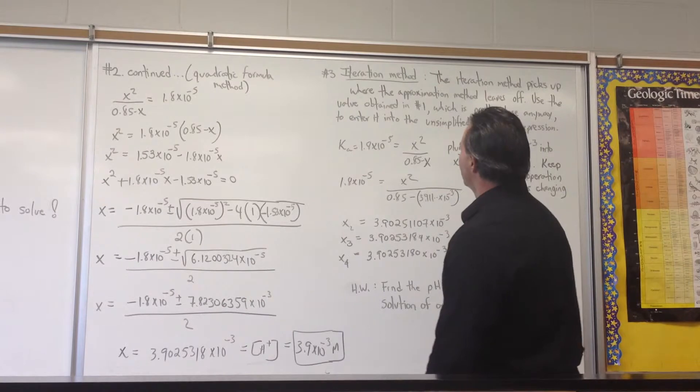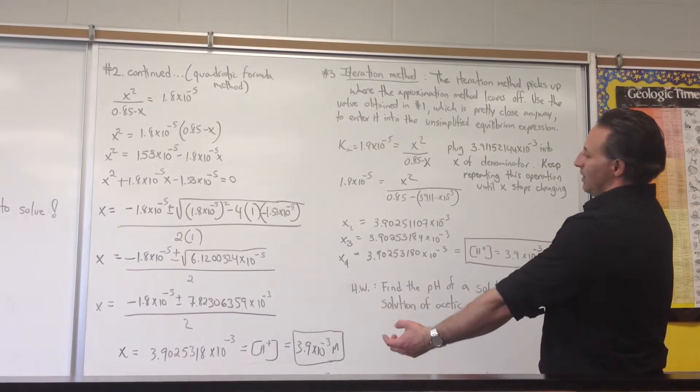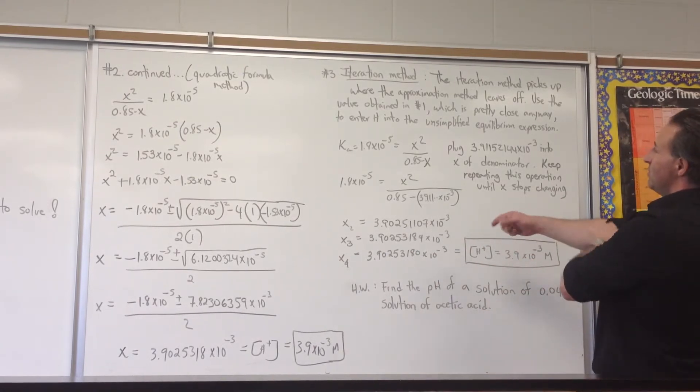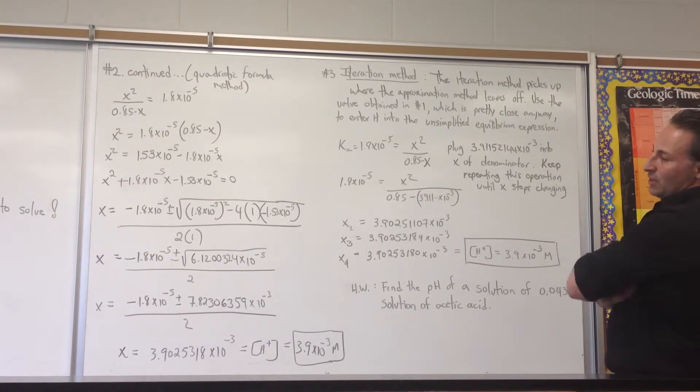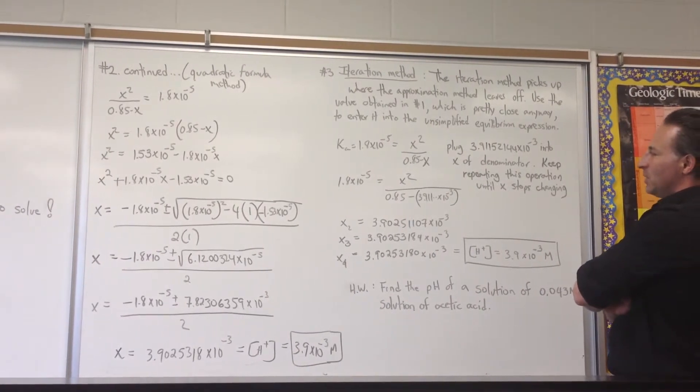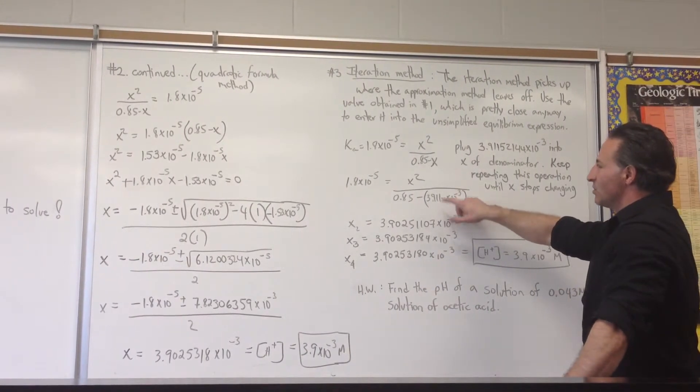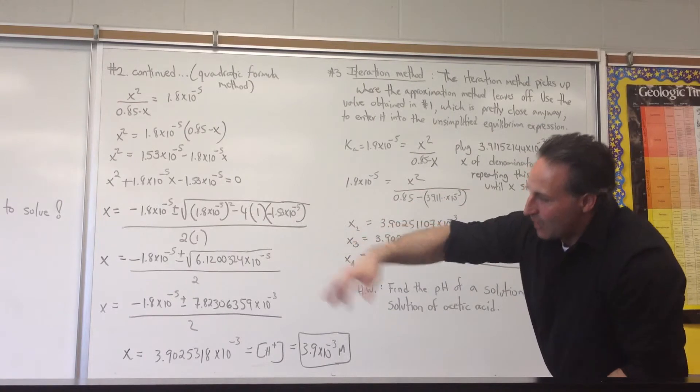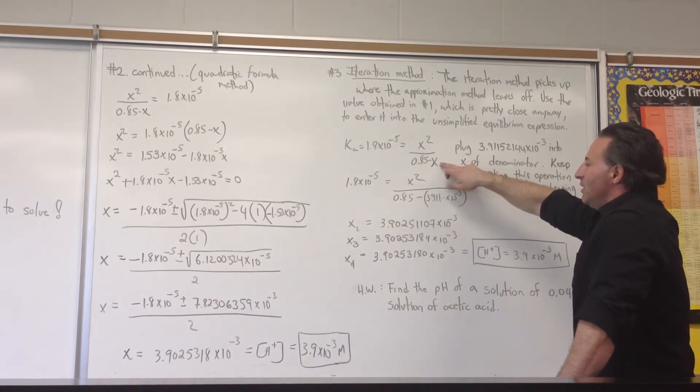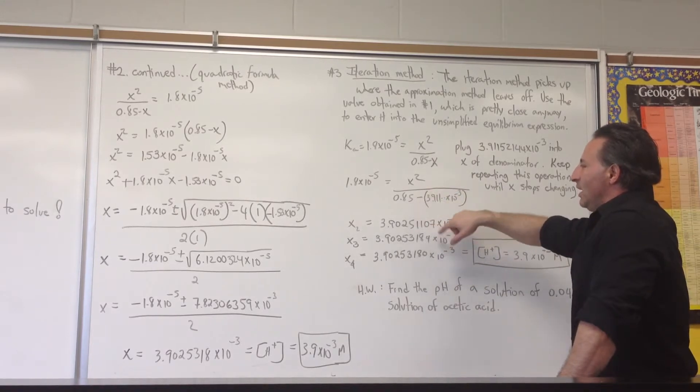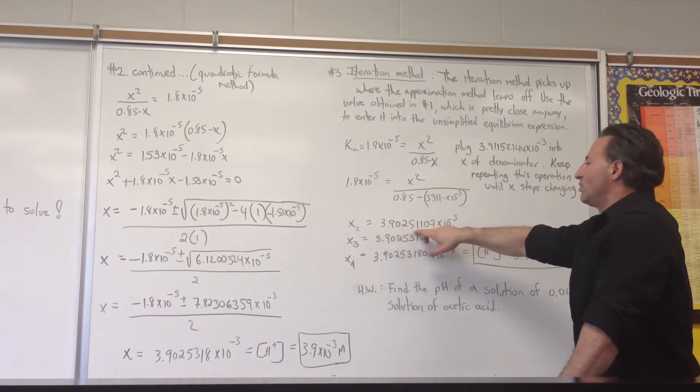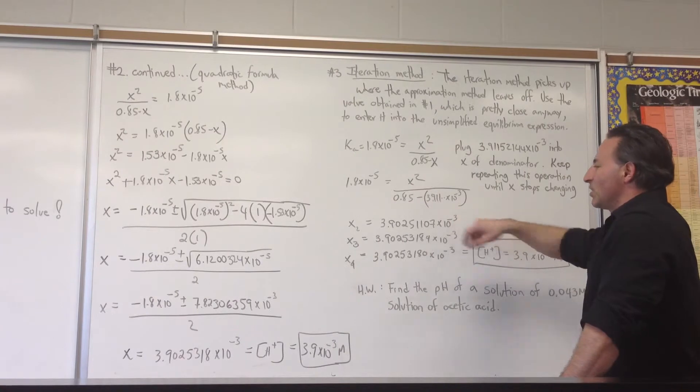The third method, the one I prefer, is the method of iteration. It should give you an identical answer to what you get with the quadratic formula. The iteration method picks up where the approximation method leaves off. You begin by doing the same thing as you do with the approximation method, but the value of X that you obtain is plugged back into the original equation. Using technique number 1, I got a value for X, which was 3.9115244. I plug that value of X into here, and it gives me a new value for the denominator. When I solve for X, I get X sub 2, which is 3.90251107 times 10 to the minus 3.